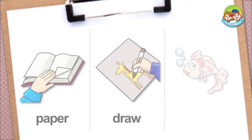Draw. When you draw something, you use a pen, pencil, or crayon to make a picture. Someone draws a giraffe using a crayon.